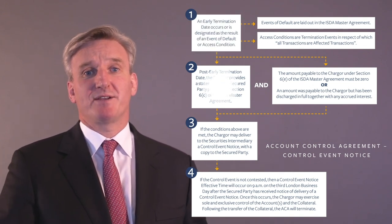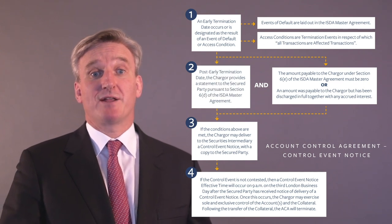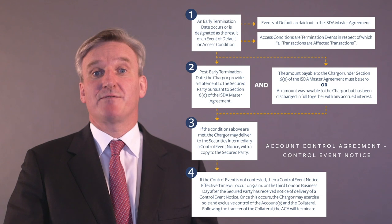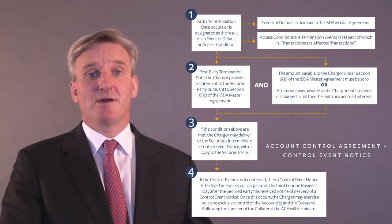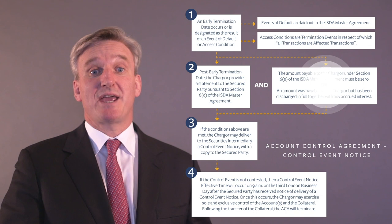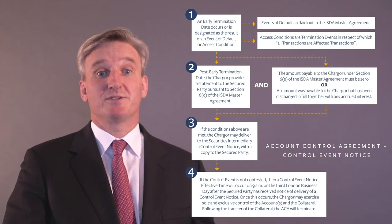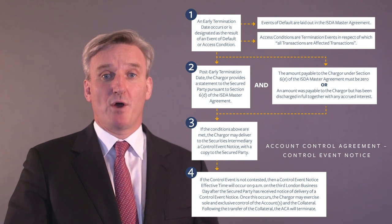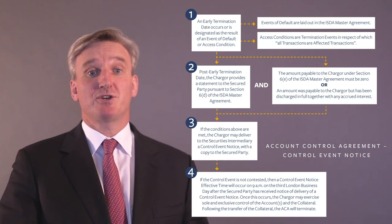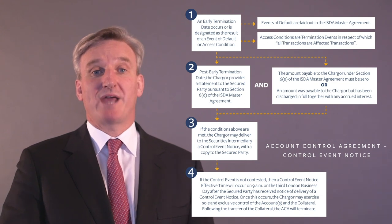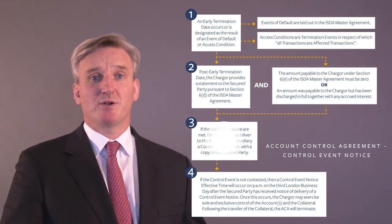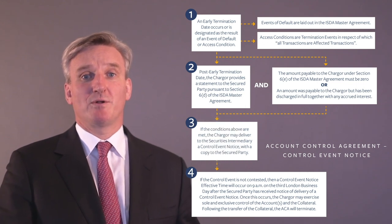Where the chargor is the defaulting or affected party, the chargor has provided a statement to the secured party in respect of the early termination date pursuant to Section 6(d) of the ISDA master agreement, and either the amount under Section 6(e) of the ISDA master agreement payable to the chargor is zero, or this amount was payable by the chargor but has been discharged in full together with any accrued interest. This will then allow the chargor to exercise sole and exclusive control of the accounts and the collateral by delivering a control event notice to the securities intermediary. This is however subject to contest rights set out in the account control agreement.